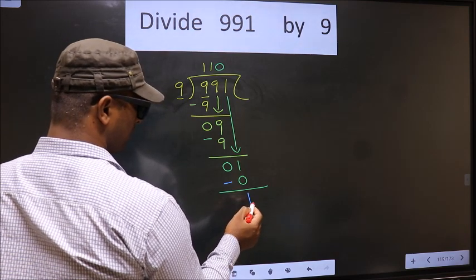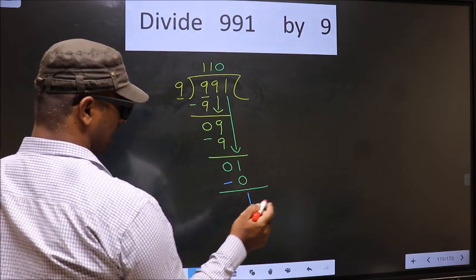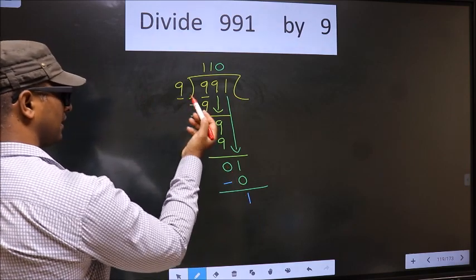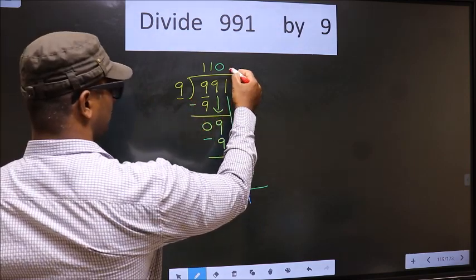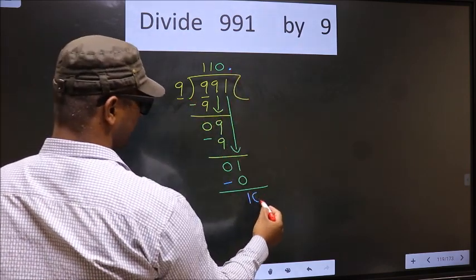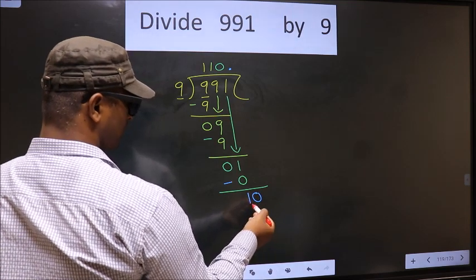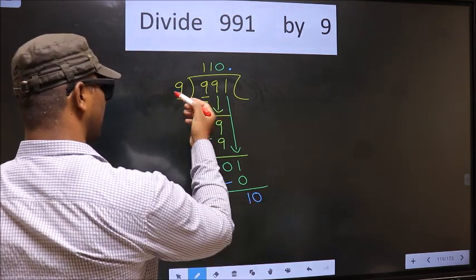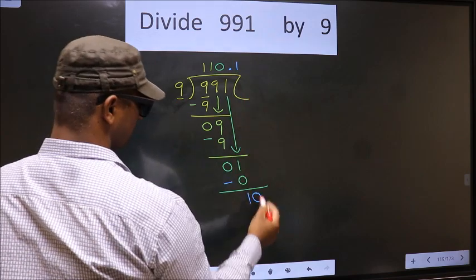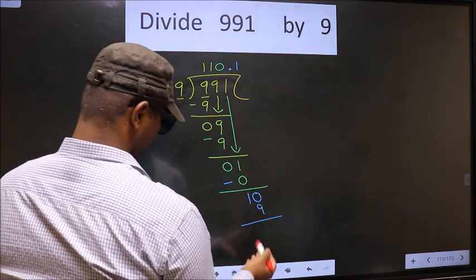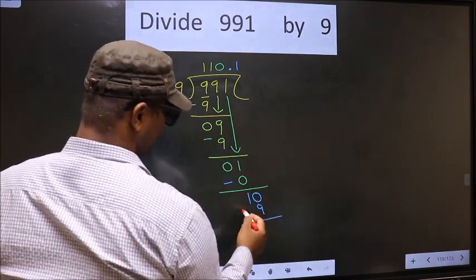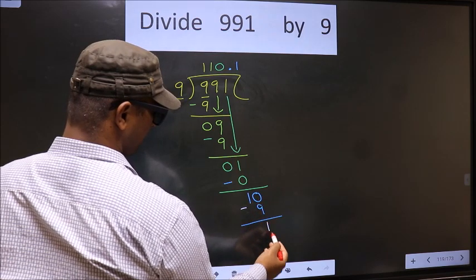Over here we did not bring any number down, and 1 is smaller than 9. Now you can put a dot and take 0 here. So 10, a number close to 10 in 9 table is 9 once 9. Now you subtract. 10 minus 9, 1.